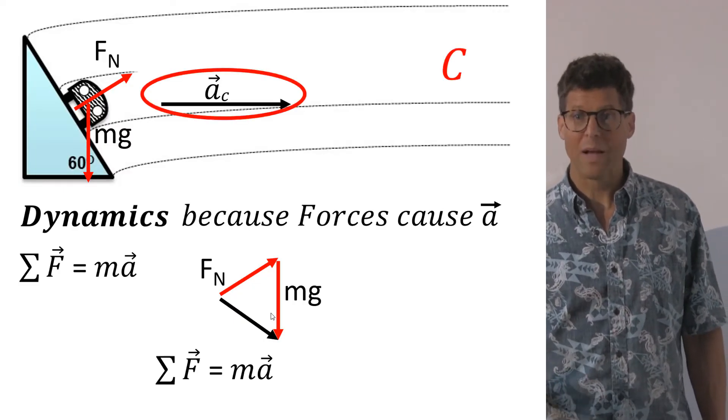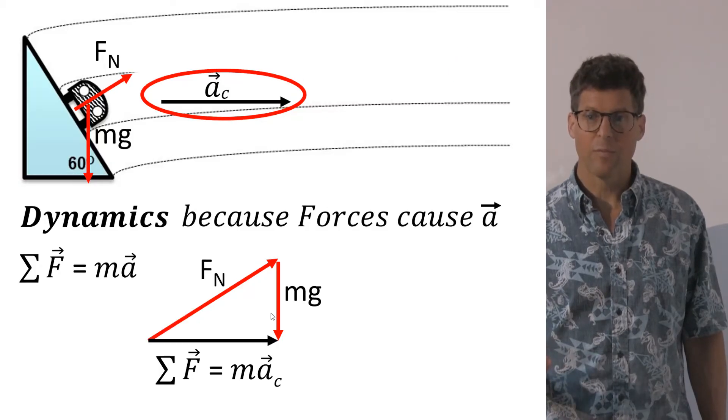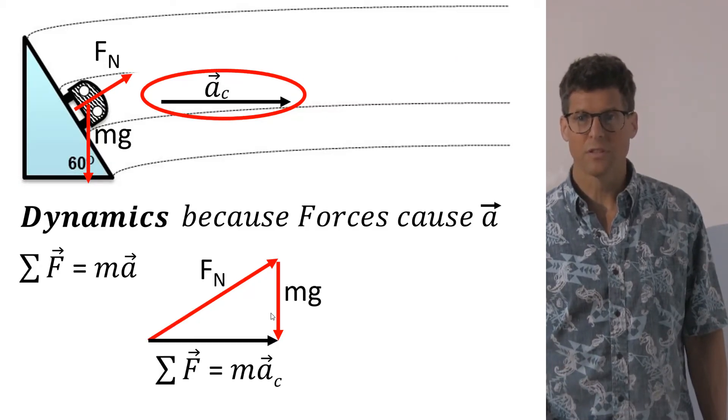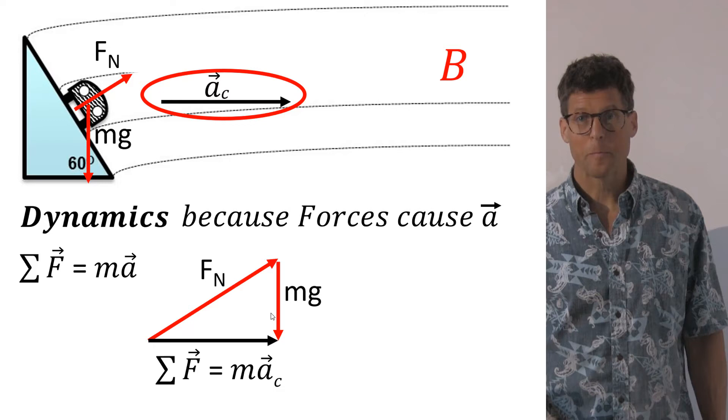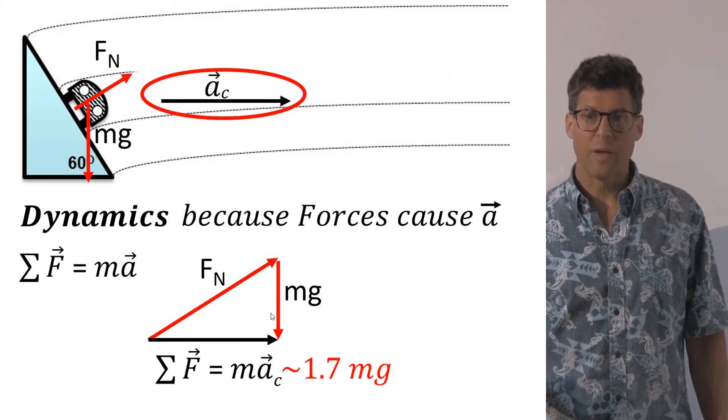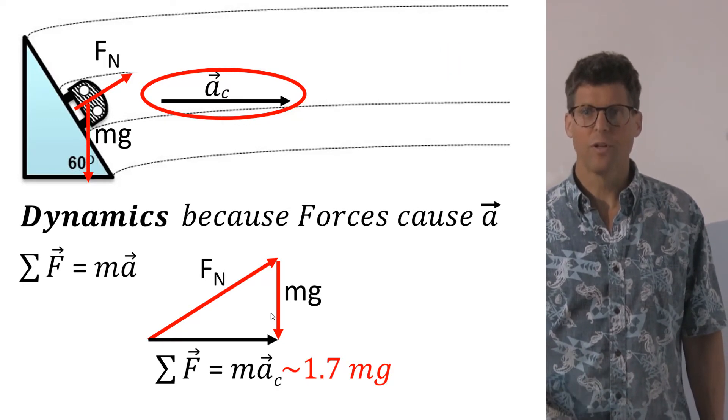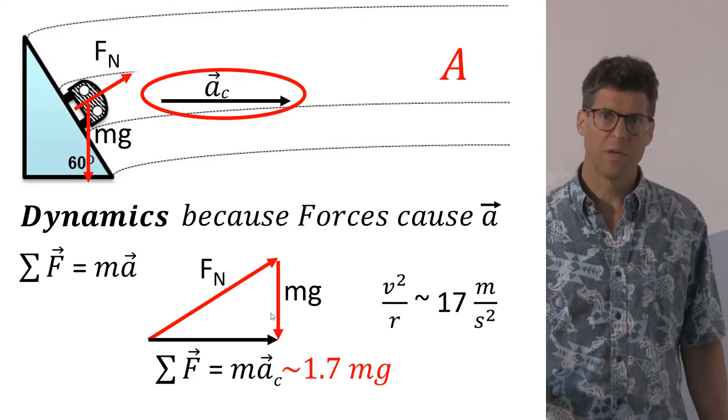But if they furthermore recognized the acceleration must be in the same direction as the sum of the forces, they would get a B. Lastly, if they were able to estimate what the sum of the forces were, and substituting the right values to get the correct answer, they would get an A.